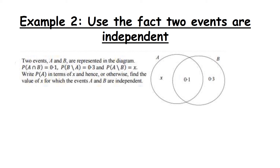Now for the second and last example. Two events A and B are represented in a diagram where A intersection B is 0.1, the probability of B less A is 0.3 — that's the part of B that does not intersect with A — and the probability of A less B is X, which is the bit of A that doesn't intersect with B. The first part asks us to write down the probability of A in terms of X. The probability of A is the full circle, which equals X plus 0.1. We can't simplify further since we have X and a number.